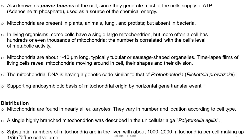Mitochondria are found in nearly all eukaryotes. They vary in number, location, and distribution according to cell type. A single highly branched mitochondrion is a characteristic feature of the unicellular algae Polytomela agilis. In liver cells, 1000 to 2000 mitochondria are present per cell, making up about one fifth of the cell volume.